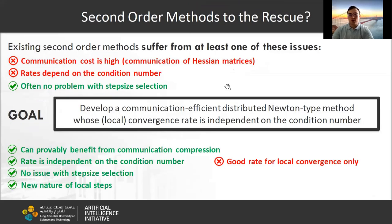One of the possible solutions is to use second-order information about the objective. However, all existing second-order methods suffer from at least one of the following problems: communication cost is too high, or rates depend on the condition number. Our goal is to develop a communication-efficient distributed Newton-type method whose local convergence rate is independent of the condition number.